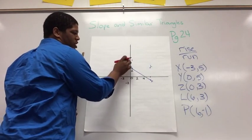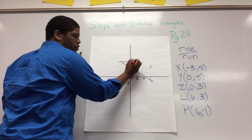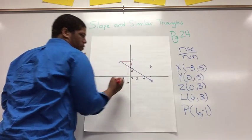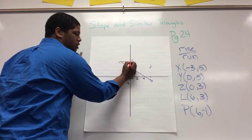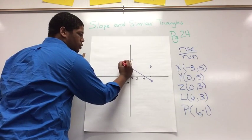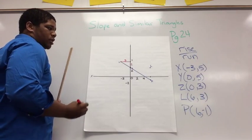So when I went up from Z to Y, I went, starting here, I went 1, 2. So I'm going to put a 2 here for my rise. And then when I went from Y to X, I went over 1, 2, 3. So I'm going to put a 3 here.